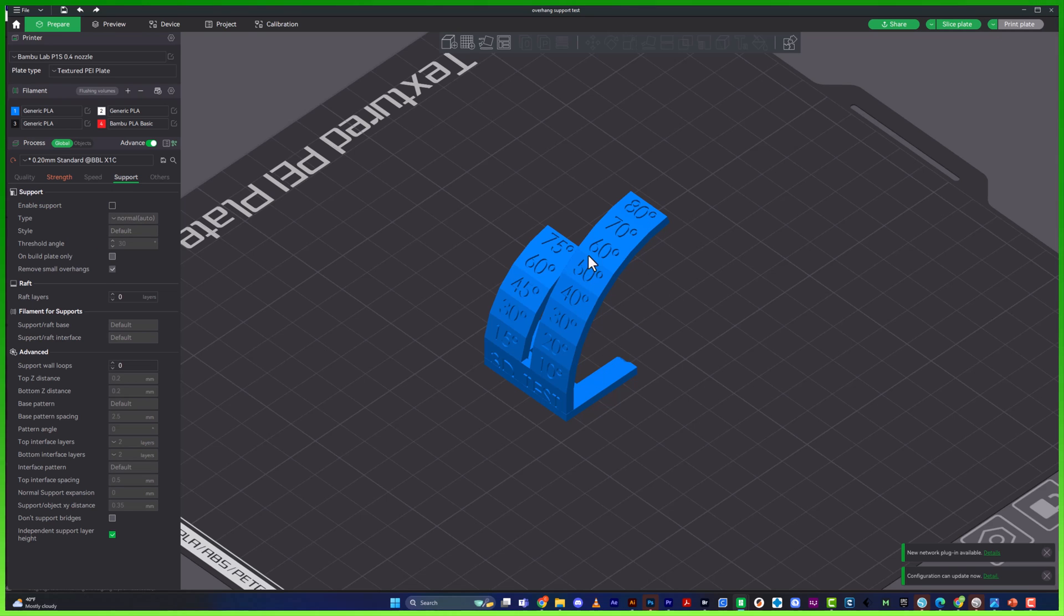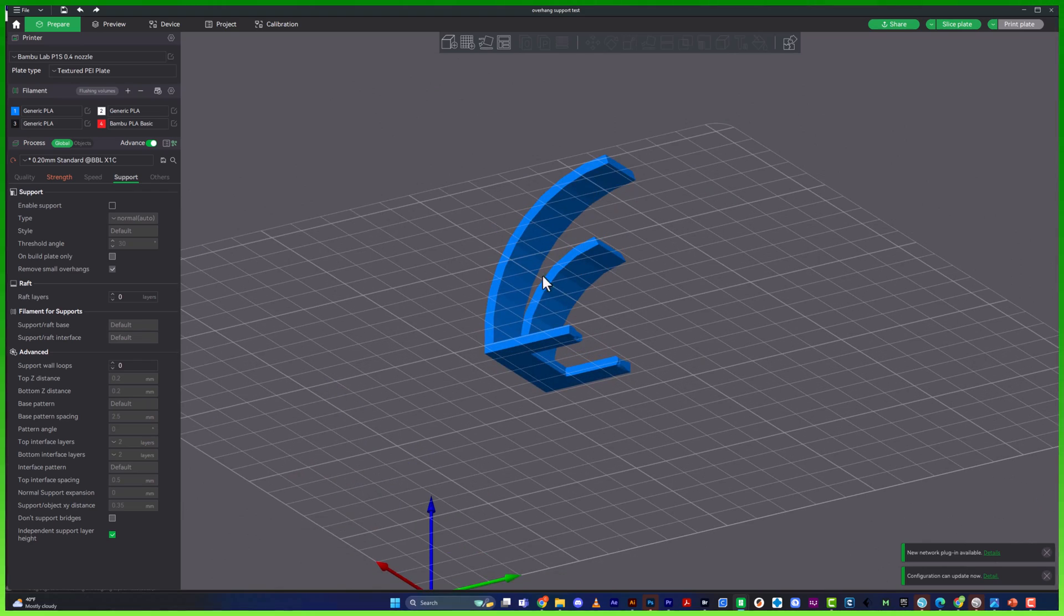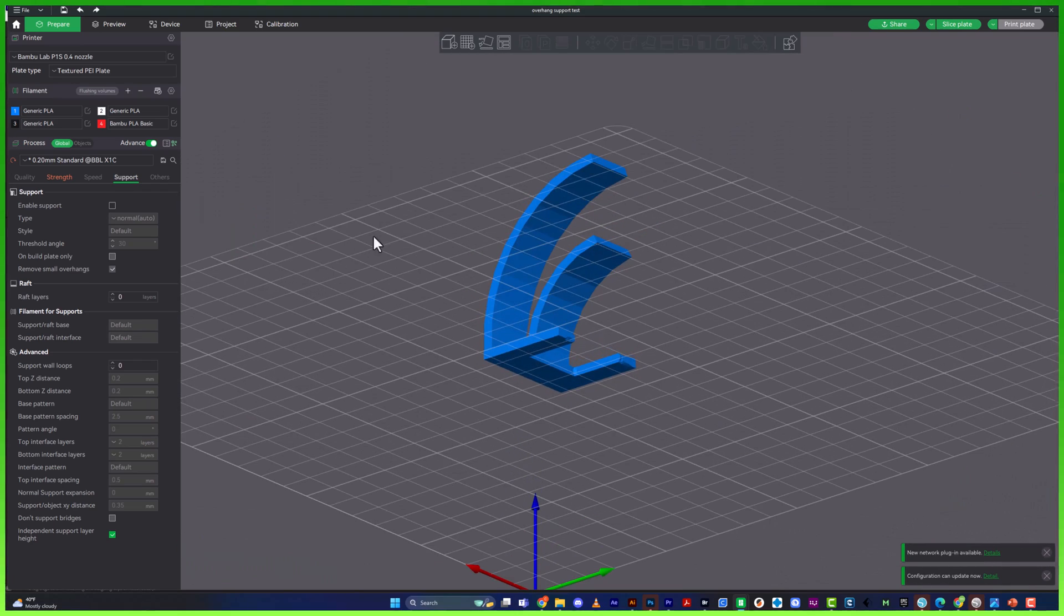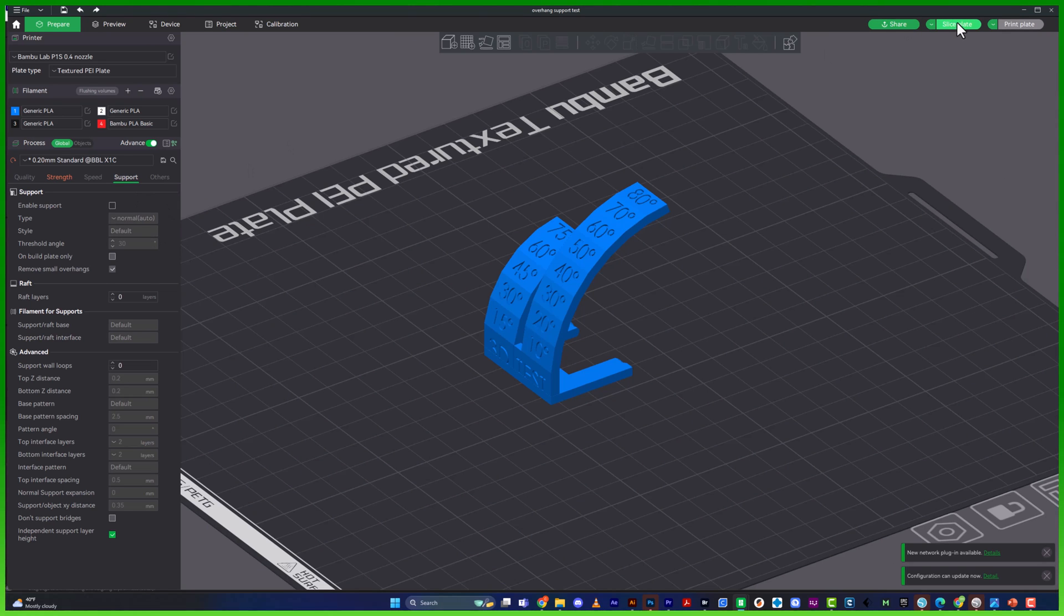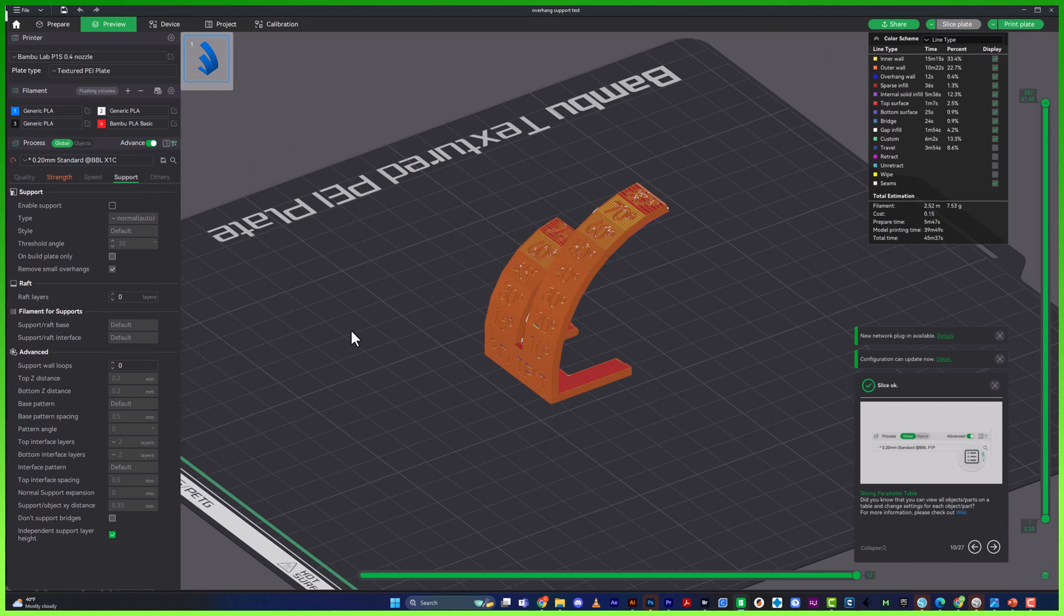And then I'm going to come over to my support tab and make sure that I do not have it checked, because that's the whole purpose of this overhang test, is to see how far we can 3D print without having supports, because we actually want this to fail in some parts. I'm going to go ahead, slice this, and I'm going to send it over to my P1S.